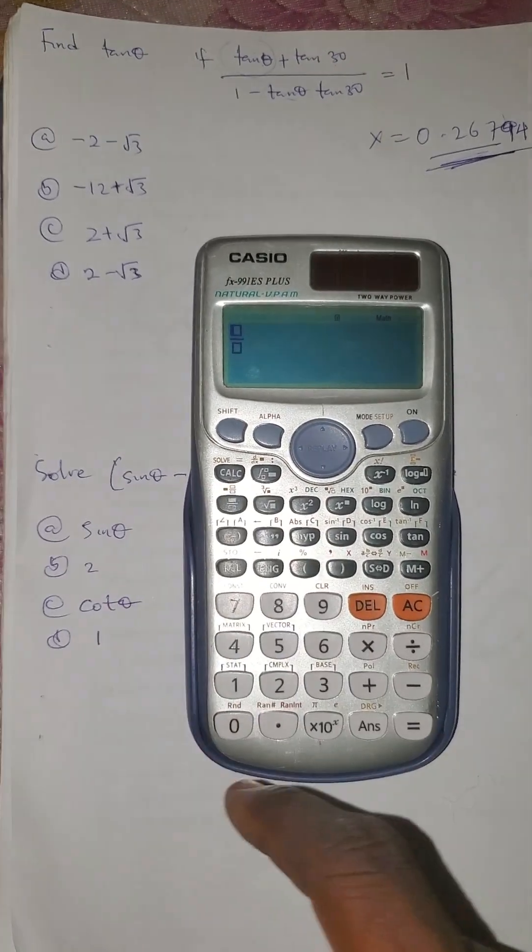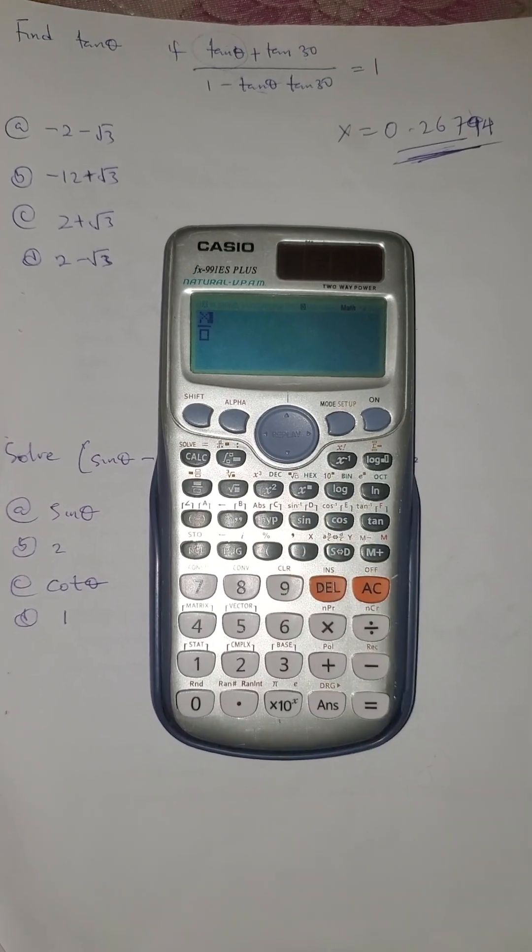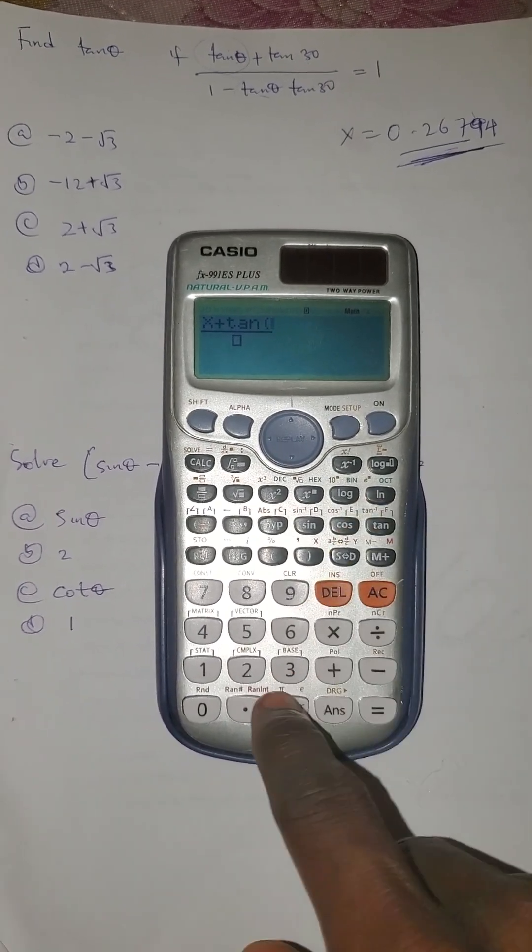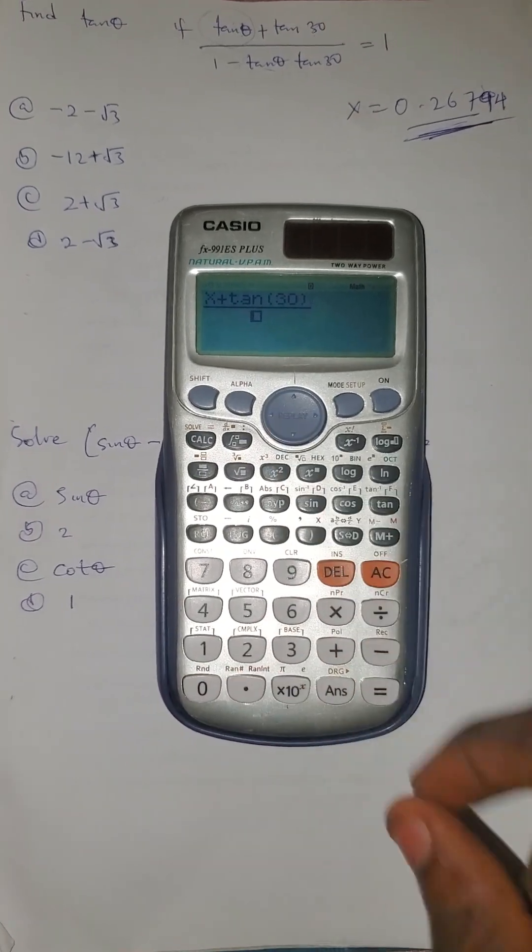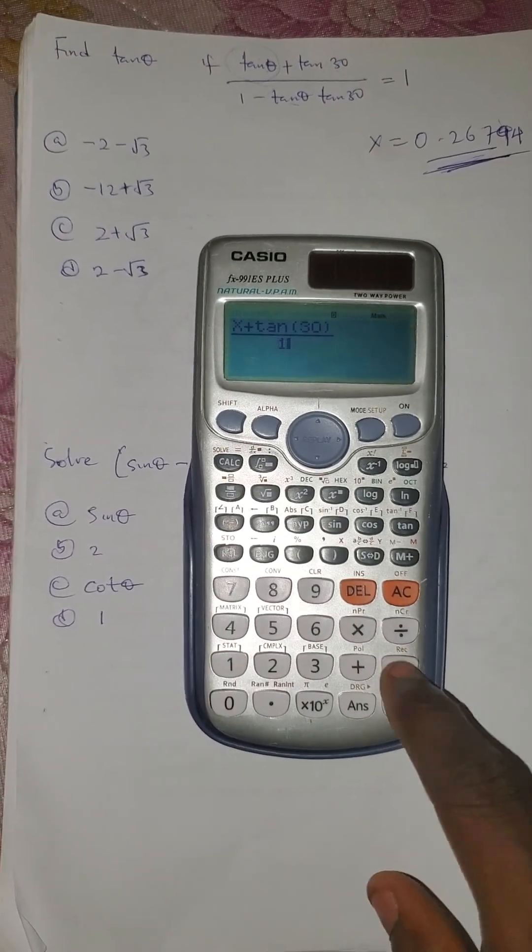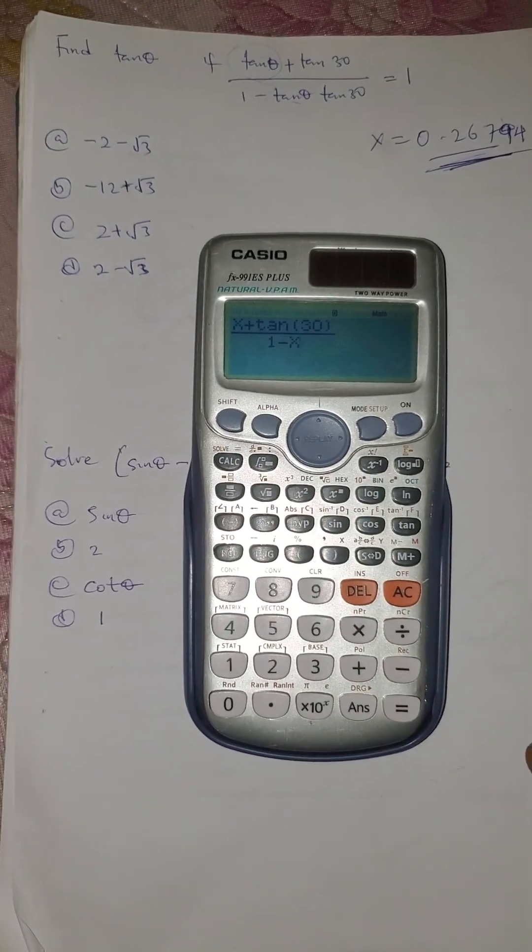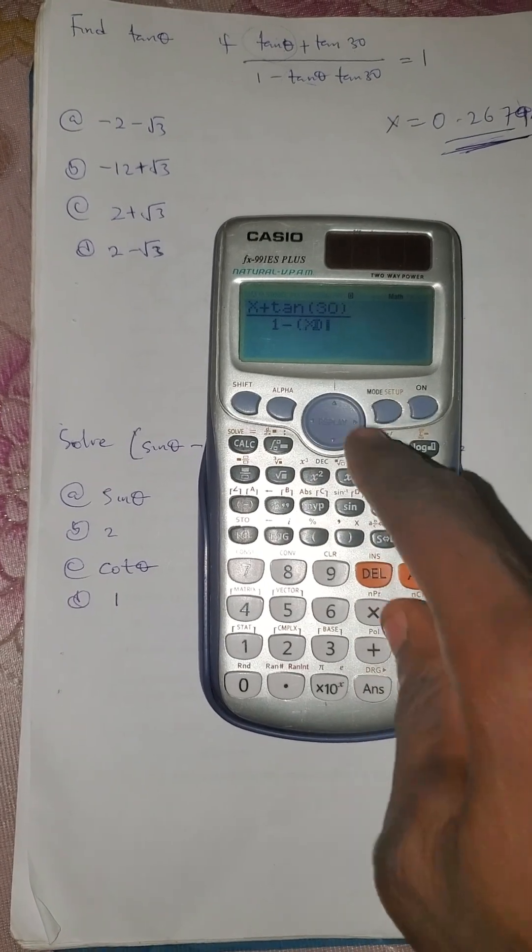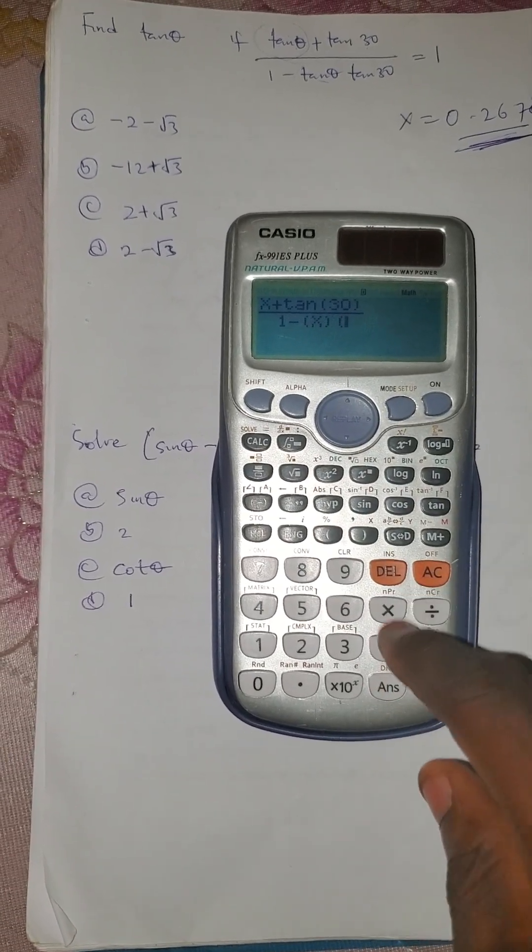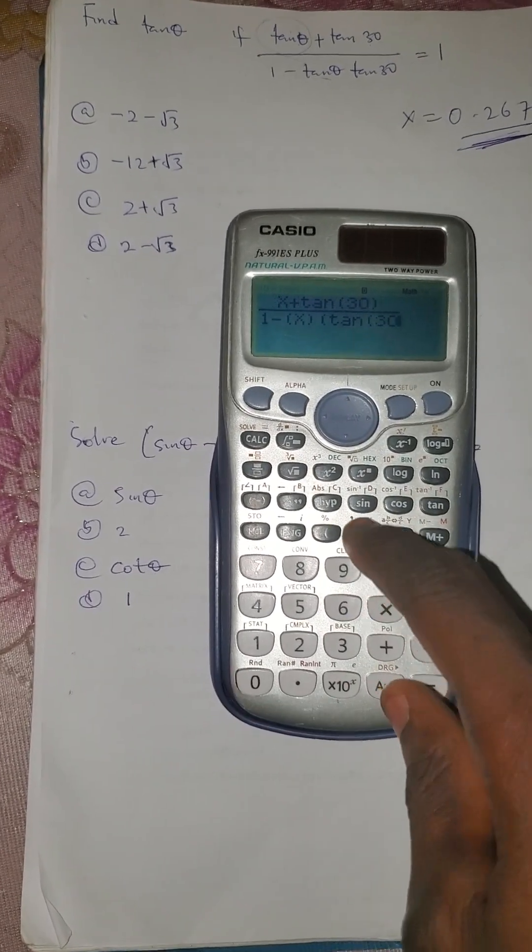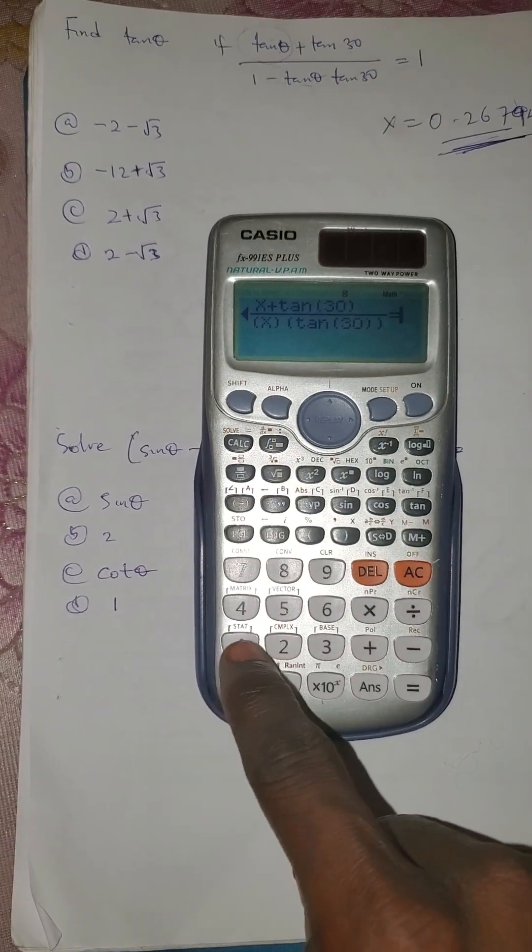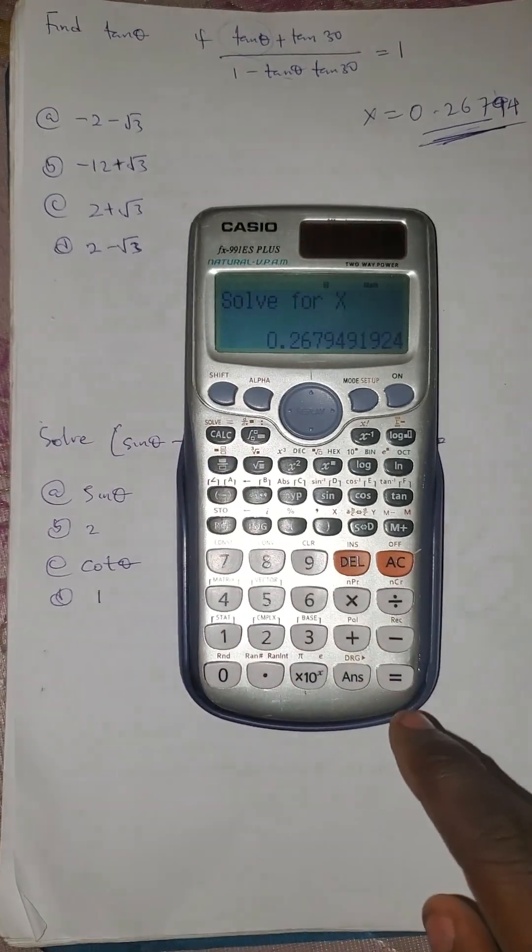Press your fraction button. I have alpha x which is tan theta, plus tan 30, close the bracket. Come to your denominator: 1 minus tan theta (which is x), then tan 30. Put this inside the bracket, close the bracket, then equals 1. Solve for x.